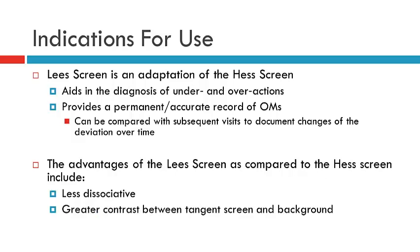The Lee Screen is in essence an adaptation of the Hess screen and as such its indications for use are the same. In general, we will utilize it in patients with incomitant strabismus where we're interested in mapping under actions and over actions or measuring the deviation in nine positions of gaze. It also provides a permanent accurate record of ocular movements and thereby we can compare the patient's progress over time.